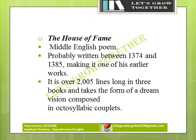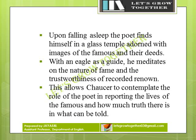The House of Fame is a Middle English poem, probably written between 1374 and 1385, making it one of his earlier works. It is over 2,000 lines long in three books and takes the form of a dream vision. It was composed in octosyllabic couplets. Upon falling asleep, the poet finds himself in a glass temple adorned with images of the famous and their deeds. With an eagle as a guide, he meditates on the nature of fame and the trustworthiness of recorded renown, contemplating the role of the poet in reporting the lives of the famous.